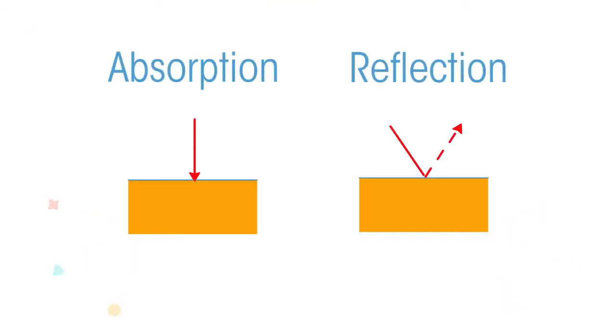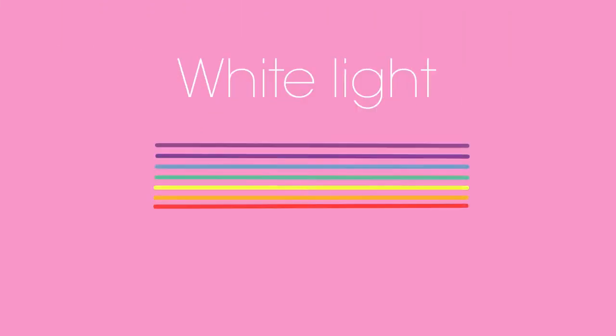Absorption and reflection often go hand-in-hand for light waves. White light contains each wavelength, so all the colors of visible light. The color of an object depends on which wavelengths of light it absorbs and which it reflects.